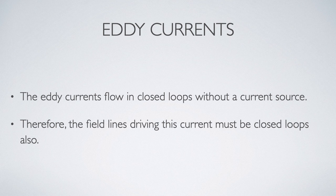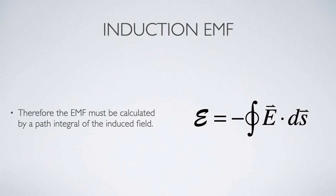Another way to visualize this difference is to think about the nature of the current that flows in a conductor. We call them eddy currents because they flow in closed continuous loops without any sort of current or EMF source. So our currents are closed continuous loops, therefore the field lines driving the current must also be closed continuous loops.